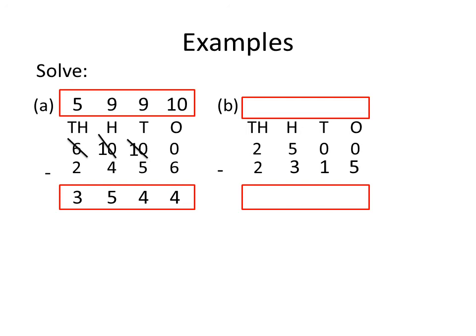So, we need to borrow from the 10's place. But look, even the 10's place has a 0, so we cannot borrow from there. Now, what to do? Yes, we borrow from the 100's place, because the 100's place has 5. When we borrow from 5, it will become 4. And the 10's place now has 10. When we borrow from the 10's place, it will become 9. And the 1's place now has 10.